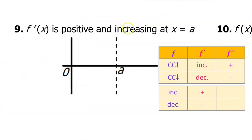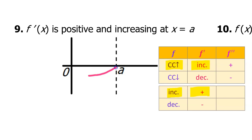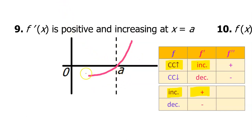Our little chart is really going to help us on problem number nine. f prime is positive and increasing at x equals a. So f prime is positive and increasing. That means that function f itself should be concave up and increasing at x equals a. So let's make sure that when we draw our curve it will be concave up and increasing as we go through the value of a. Any height would be fine — we just needed graphs that were rising from left to right and also concave up.